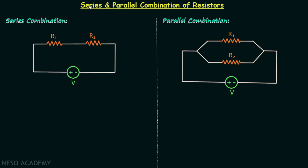We are going to have a discussion on series and parallel combination of resistors. Our main aim is: whenever we have a series combination of resistors, we try to replace the series combination with a single resistor whose resistance is equivalent to the series combination. This resistance is known as equivalent resistance, represented by R_eq. The same approach applies for parallel combination.